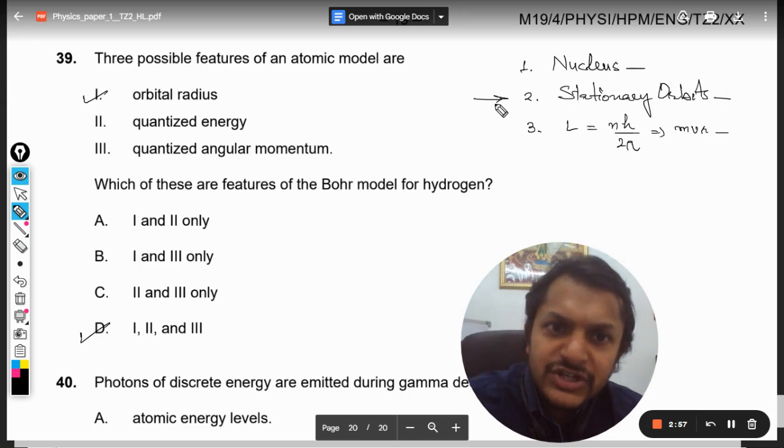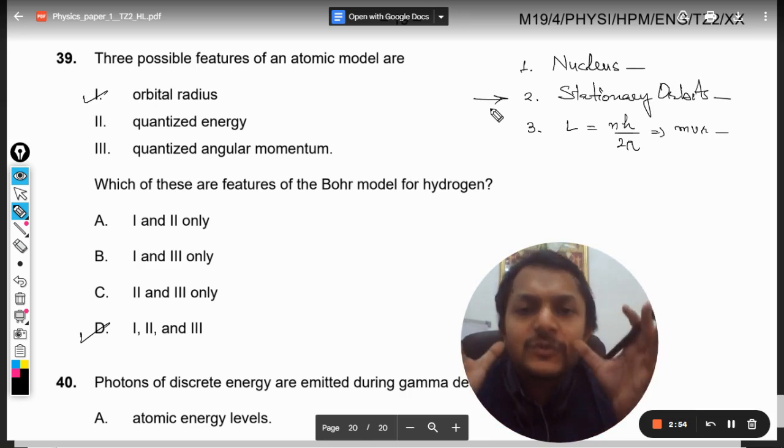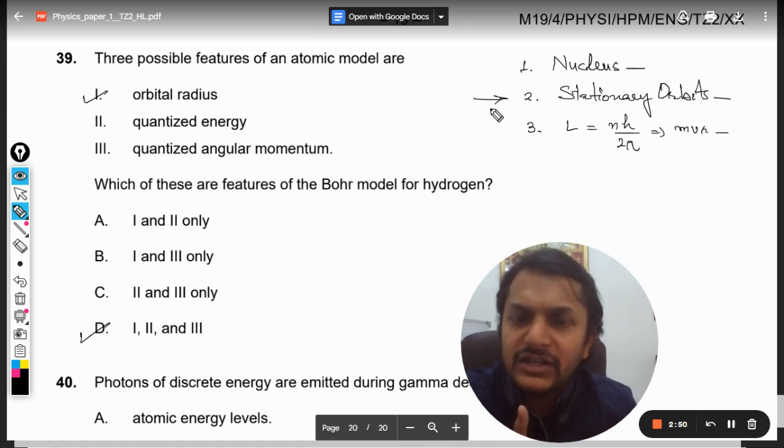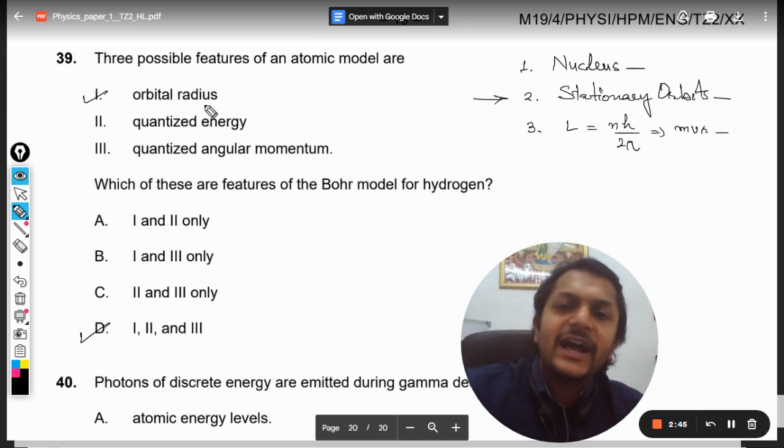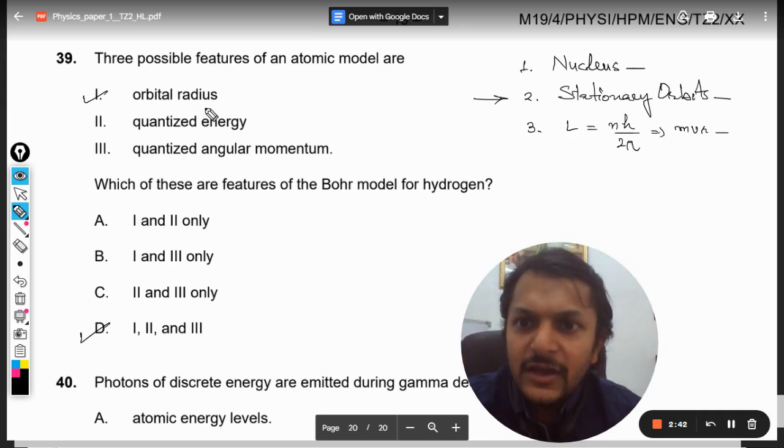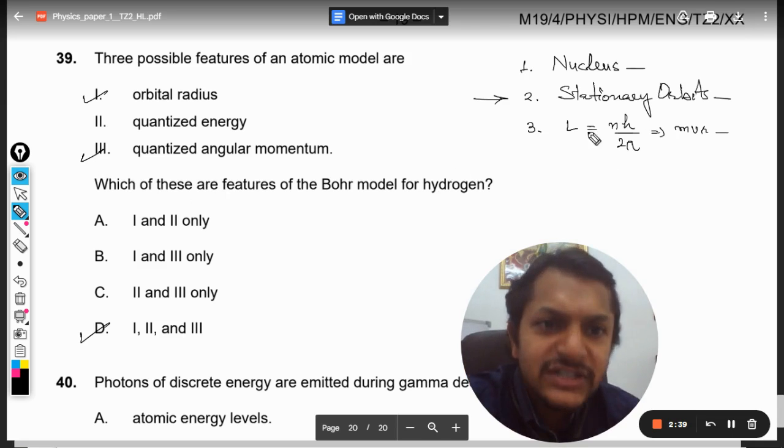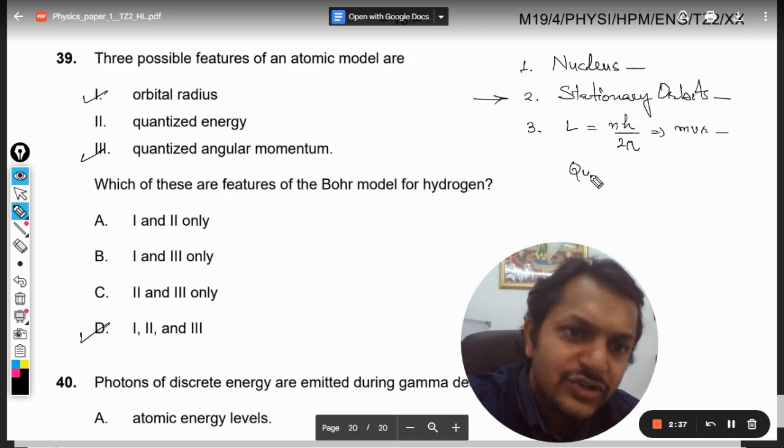Now from this theory, what happens is they are talking about the orbital radius—they are talking about some stationary orbits, and obviously those specific orbits are going to have some radius r1, r2, or r3. So this is where you create shell number one, shell number two, shell number three. So he is actually talking about the orbital radius and he is talking about the quantized angular momentum because this is known as the quantization condition.